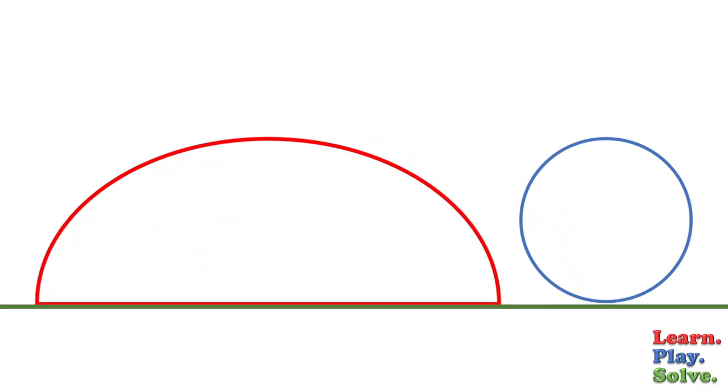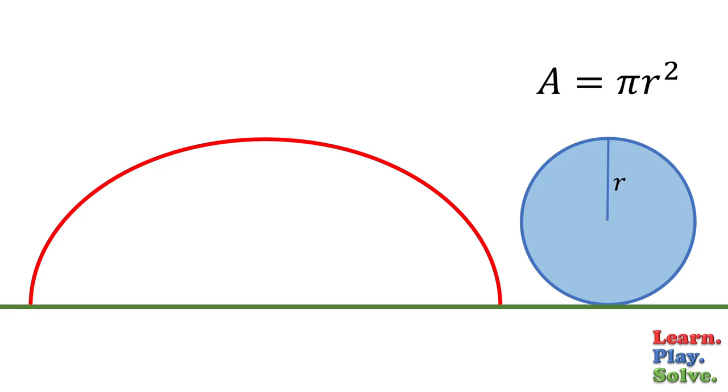This means, if the area of a circle is pi r squared, then the area under the cycloid it generates is 3 pi r squared.